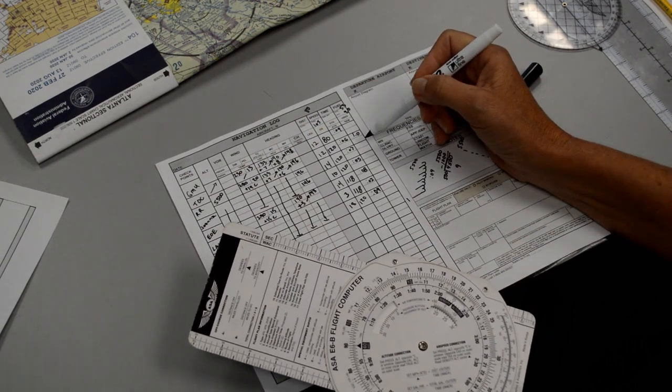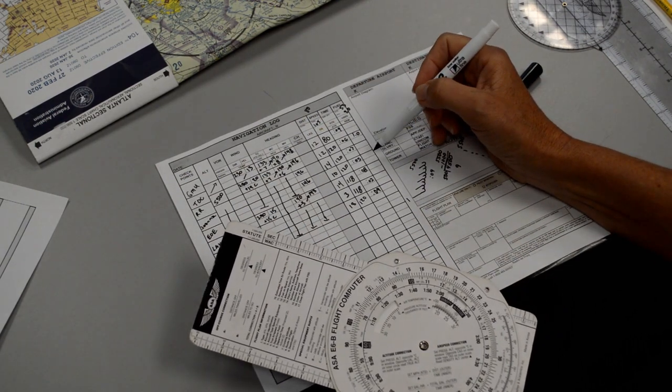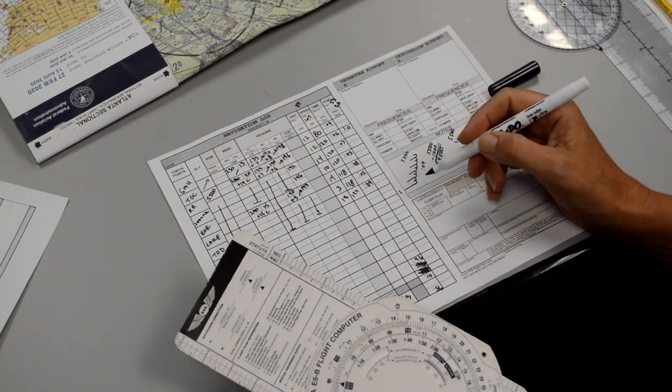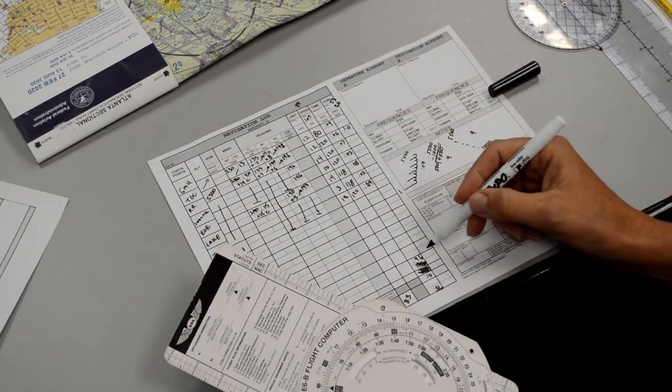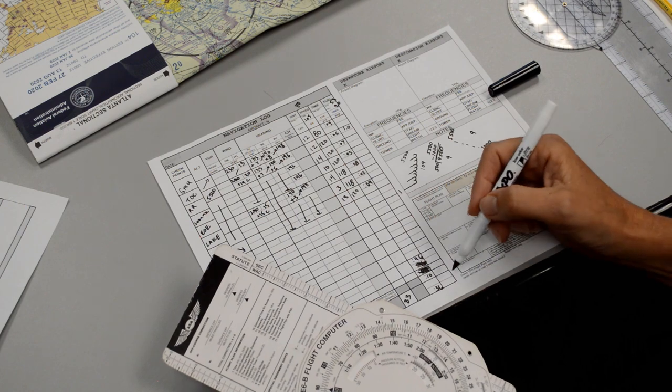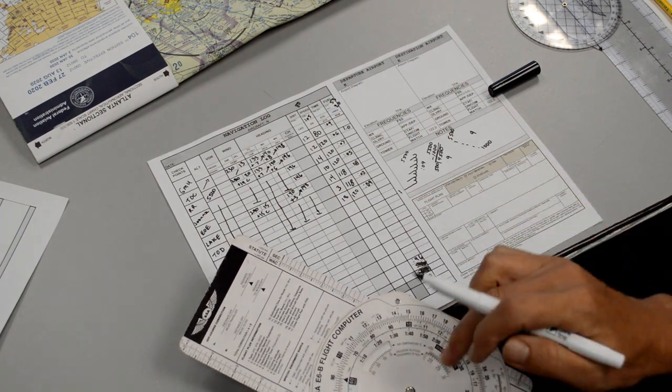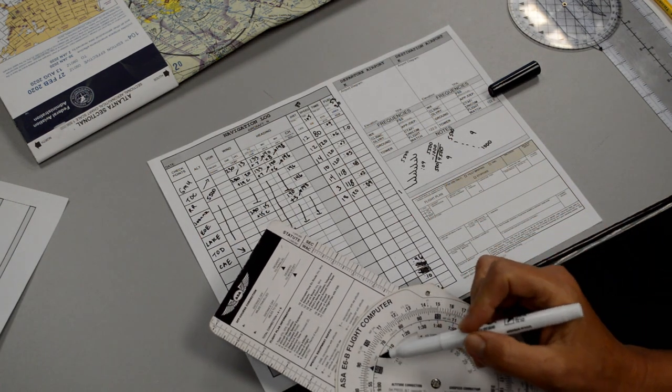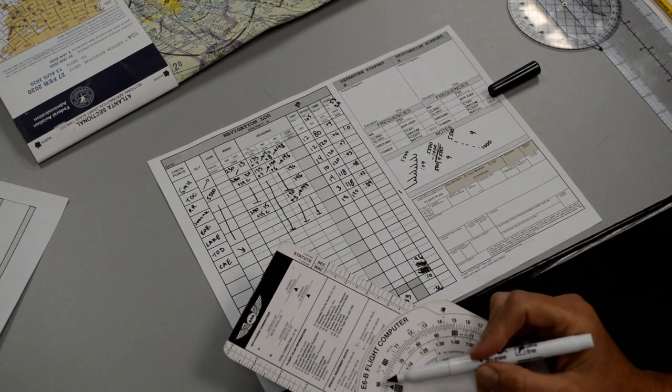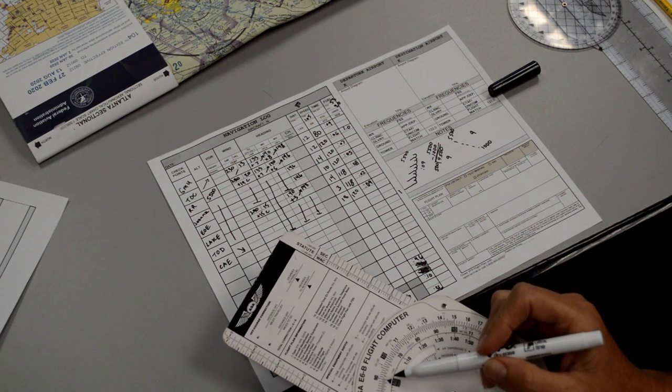So we could go through and do the fuel like that for each leg, but you don't have to waste time doing that. You could just simply take your total, which is 56 minutes. So if we burn 9 gallons a minute, or sorry, 9 gallons an hour for 56 minutes...